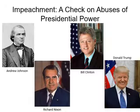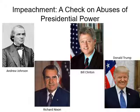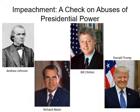Impeachment is a check on the abuses of presidential power. The power of the House of Representatives to formally accuse the President and other high-ranking officials of crimes is impeachment. Article 2, Section 4 says the President, Vice President, and all civil officers of the United States shall be removed from office on impeachment for and conviction of treason, bribery, or other high crimes and misdemeanors. If a majority of the House votes to impeach the President, they forward the Articles of Impeachment to the Senate. The Senate then tries the President, and if it determines him guilty, can remove him from office.